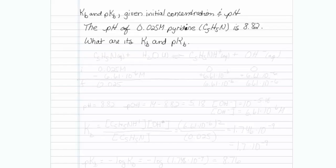This is how to determine the kB and pKB given initial concentration and pH. The pH of 0.025 molar pyridine (C5H5N) is 8.82. What are its kB and pKB?